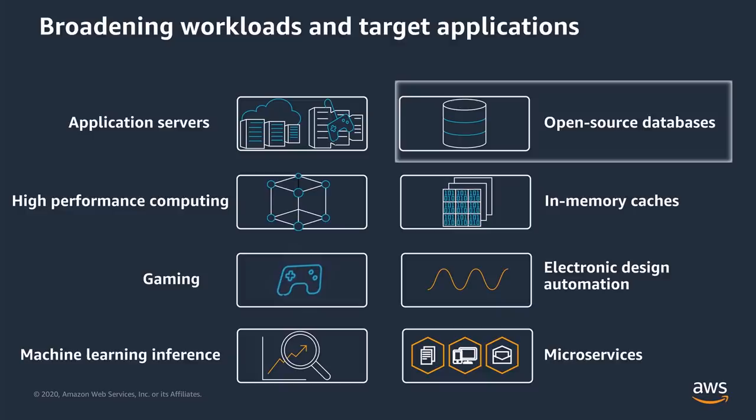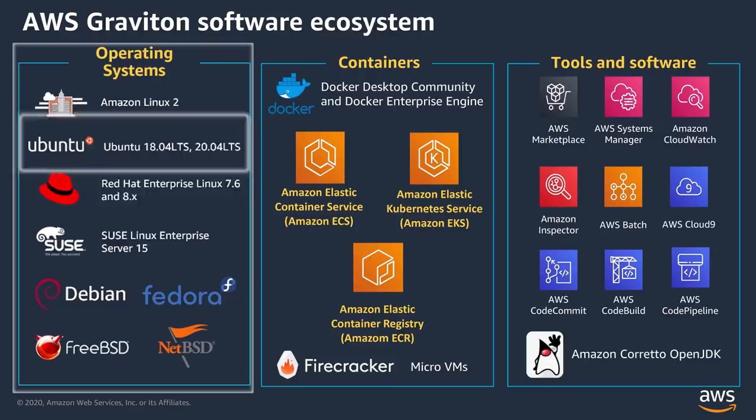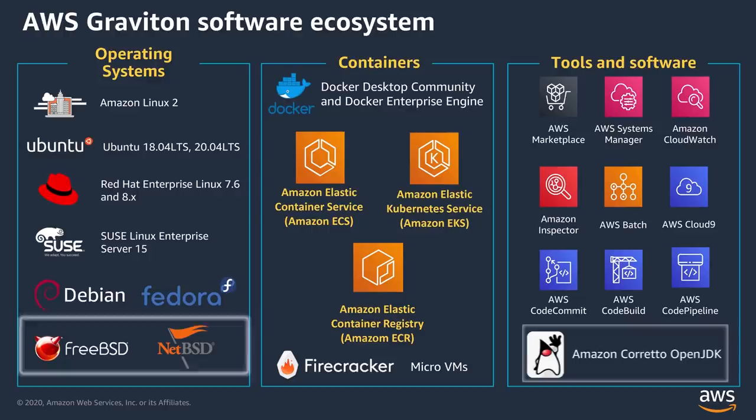They cover the full spectrum of application requirements well and with industry-leading performance. With the launch of these instance types we're happy to have strong support from a broad ecosystem of providers. In Linux distros we have Amazon Linux 2, Ubuntu, Red Hat Enterprise, SUSE Enterprise, Fedora, Debian, and FreeBSD.